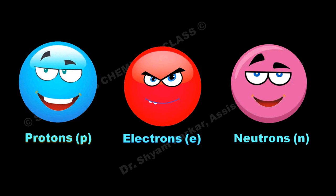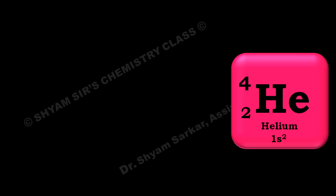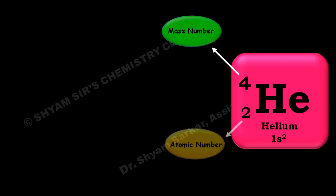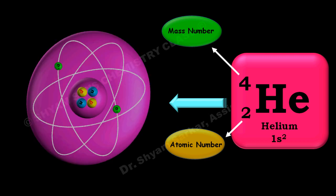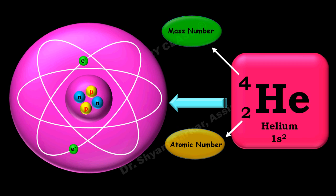Here I have represented a helium atom, which has mass number four and atomic number two, and electronic configuration 1s². There are two protons, equivalent to the atomic number, and two electrons. If you subtract atomic number from mass number you get the number of neutrons: 4 minus 2 equals 2 neutrons. This is the basic structure of helium atom — the nucleus with two protons and two electrons around it.